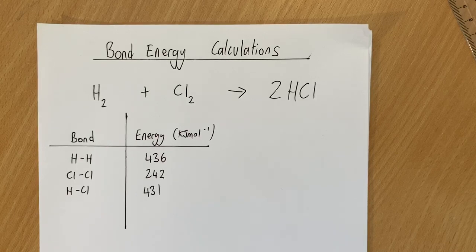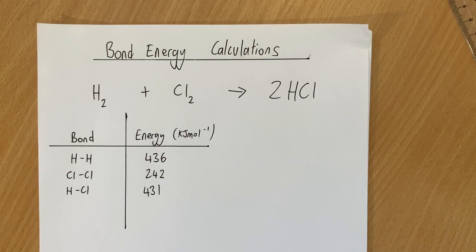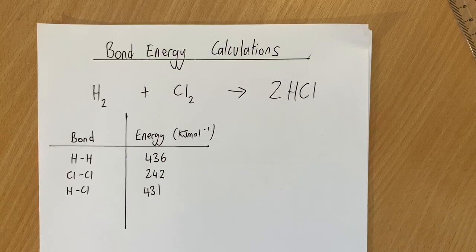A bond energy calculation allows us to work out whether the energy change during a chemical reaction is endothermic or exothermic and how much energy will be absorbed or released to the surroundings as a result of the chemical reaction taking place.